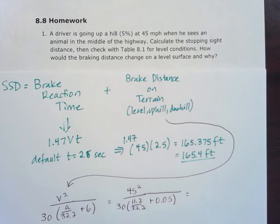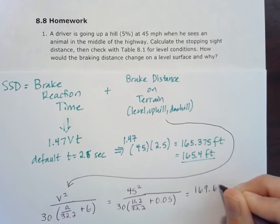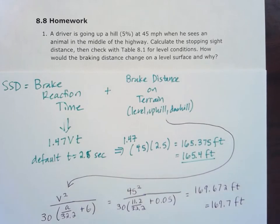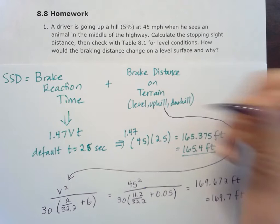When we do that math all out to three decimal places, I get 169.672. So I'll go ahead and round that also to one decimal place, 169.7 feet for that brake distance on the terrain. In this case, we have the uphill terrain.